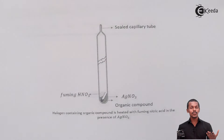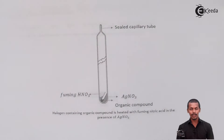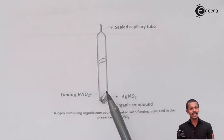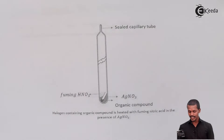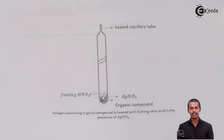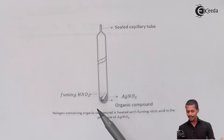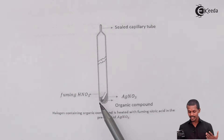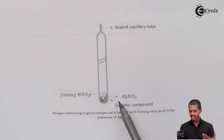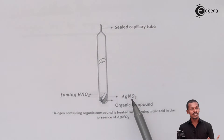To detect the percentage of the halogen atom present in the organic compound, we take the Carius tube. It consists of the organic compound of a known weight kept in a capillary. That organic compound is kept in a tube which also contains fuming HNO₃ as well as the AgNO₃ solution.